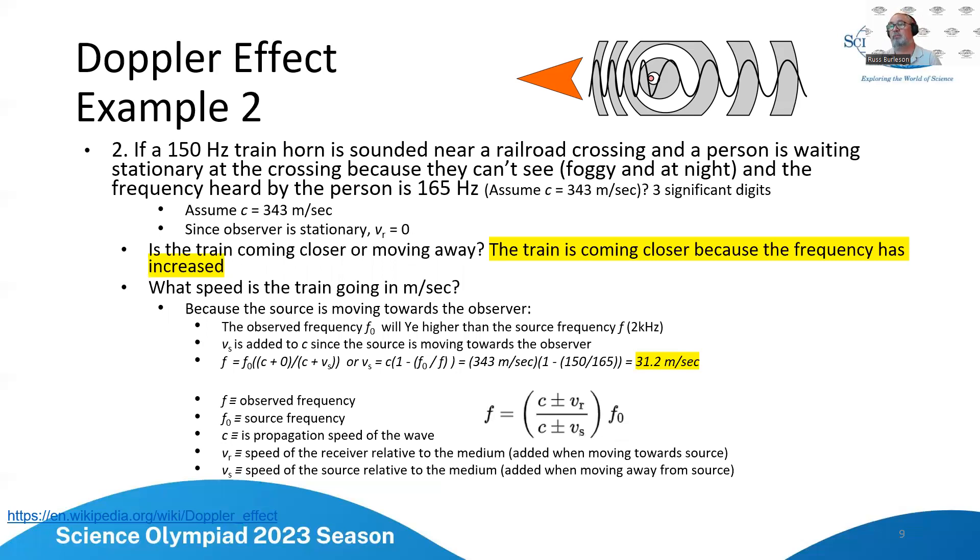So then for the train horn one, let's look at that one. So the train is coming closer. Well since the train's coming closer because the frequency has increased. And what's the speed of the train? Now again remember I told you you have to solve for all these different ways depending on whether the observer's coming closer or the source is coming closer and we come out with that it's moving at approximately 31.2 meters per second, so it's actually going quite fast.